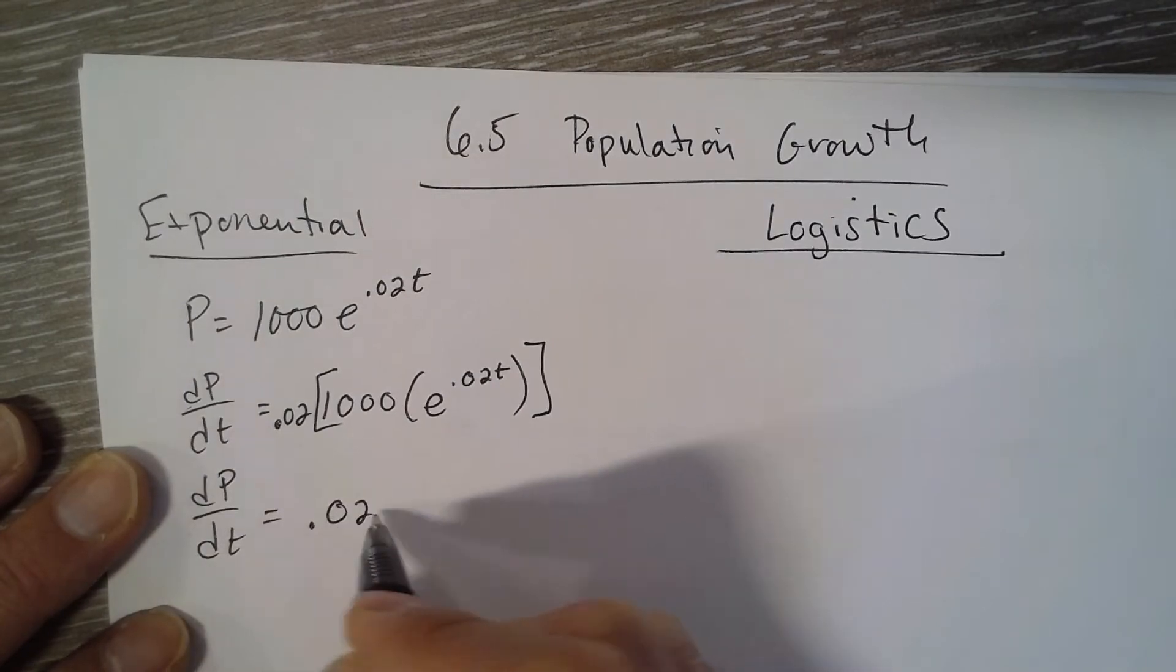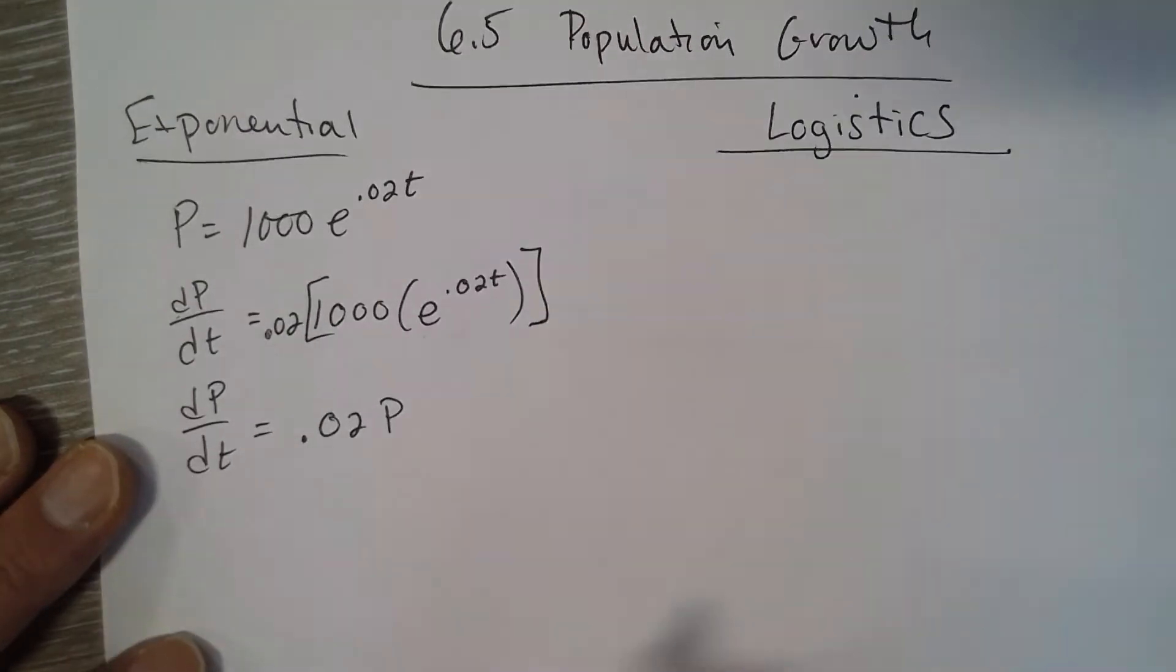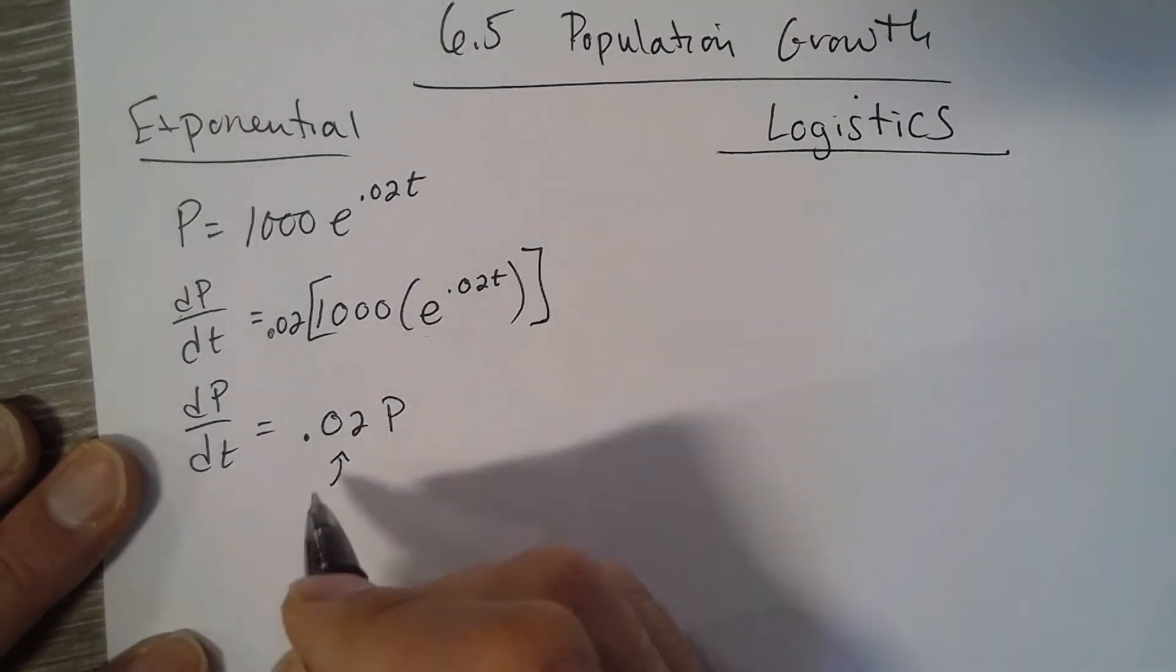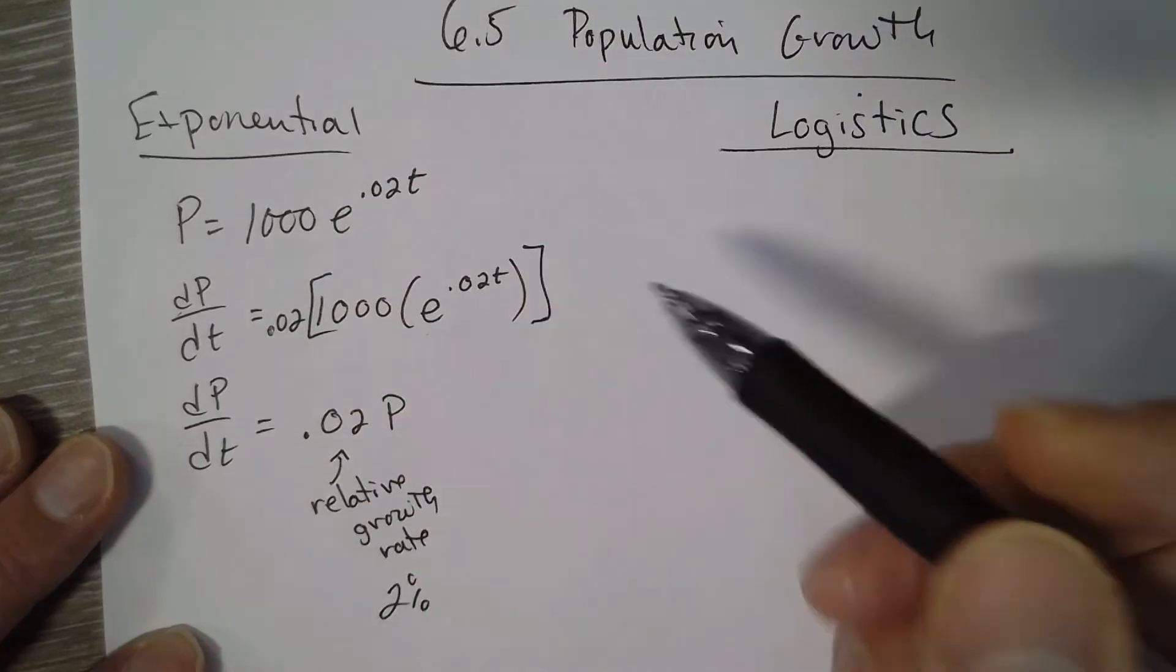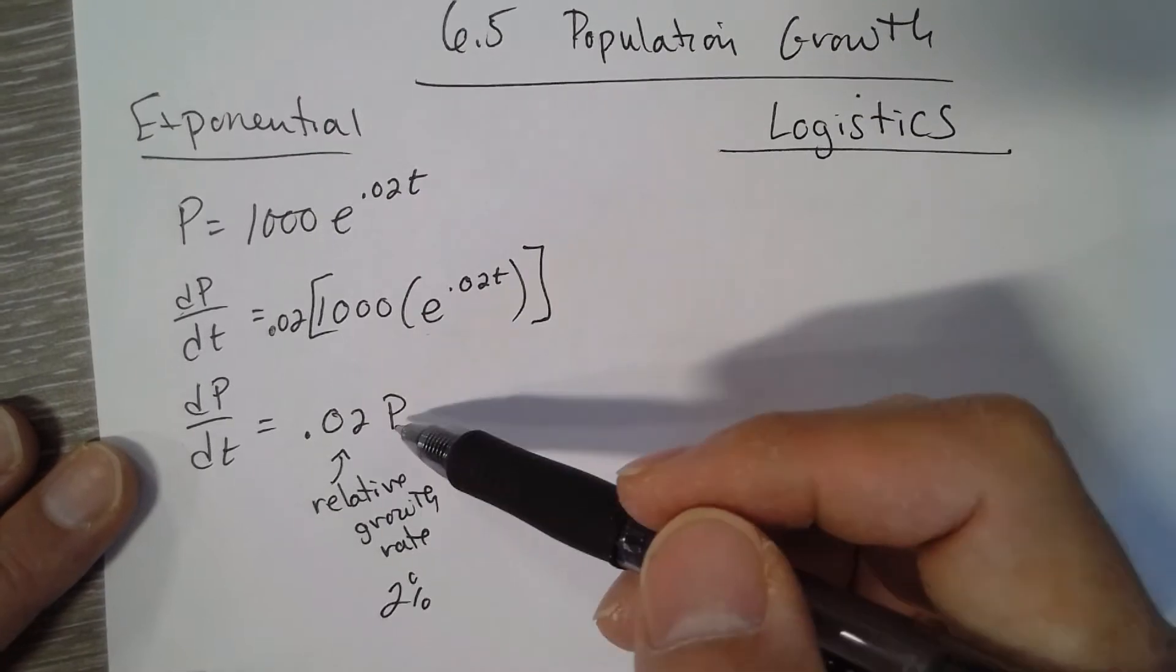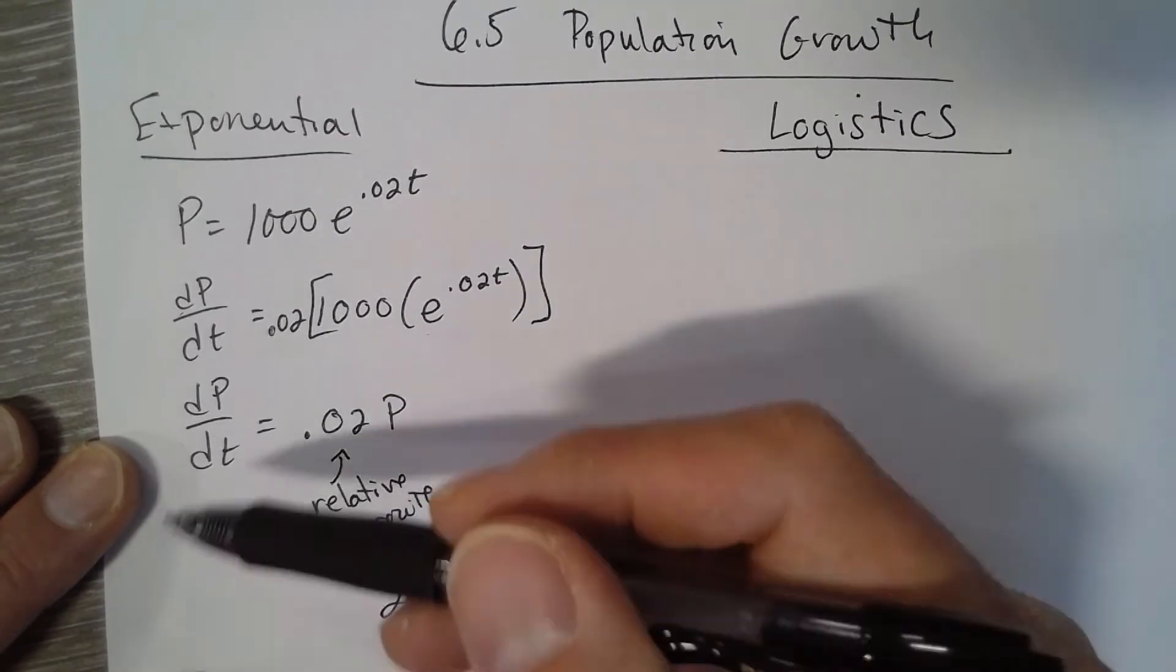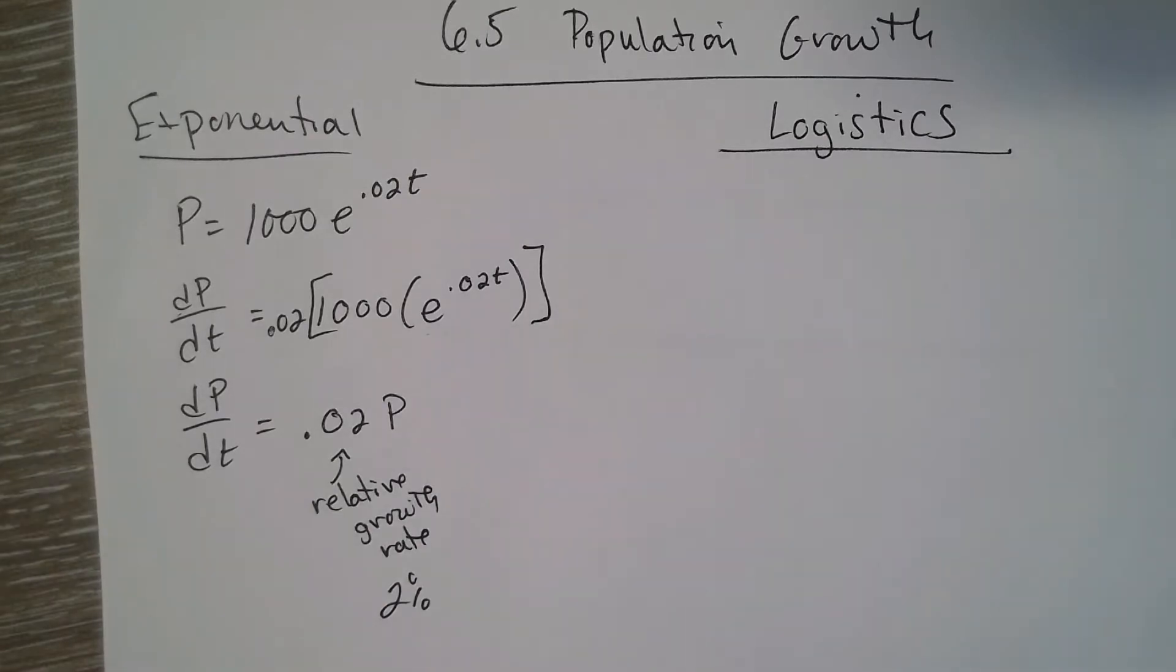So the relative growth rate is 2%. This right here is the growth rate times the population, which is the rate of change of the population. So it looks like it's going up 2%.